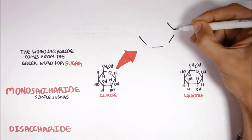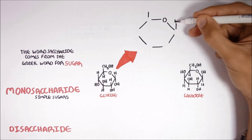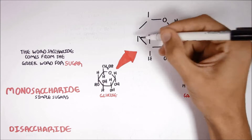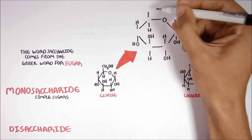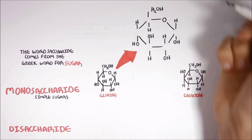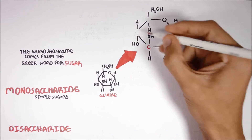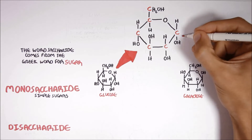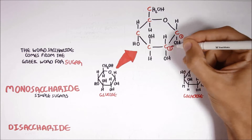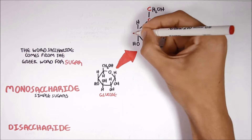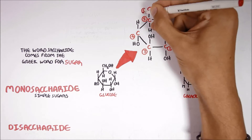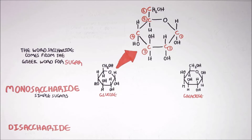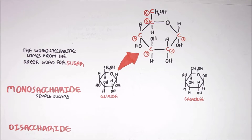Let's have a closer look. C represents a carbon atom, and we can label these carbon atoms of glucose with numbers: one, two, three, four, five, six — in this specific order. So glucose has six carbon atoms.